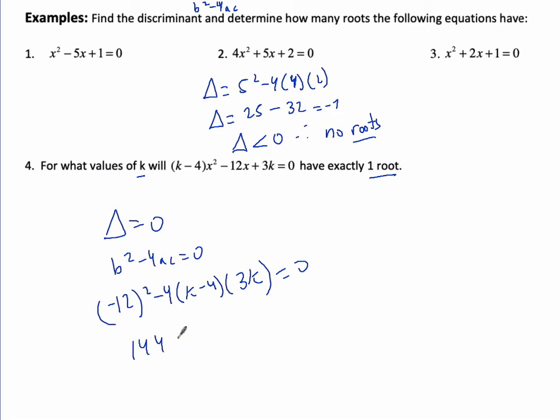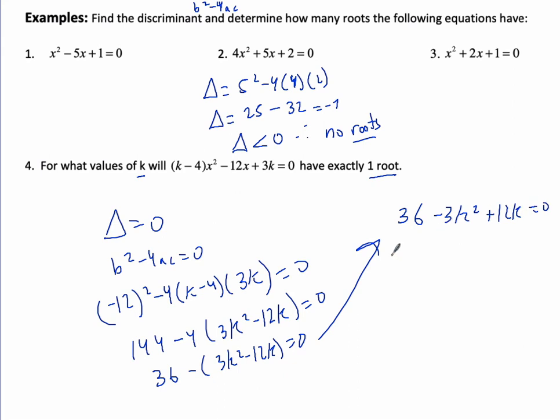Let me solve that for k. So I'm going to do negative 4 times 3k squared minus 12k. Before I multiply this out by 4, I'm going to simplify by dividing everything by 4. If I divide 144 by 4, you get 36. So 36 minus 3k squared plus 12k equals 0. I can divide by 3 and get 12 minus k squared plus 4k equals 0.